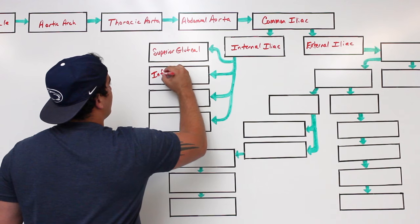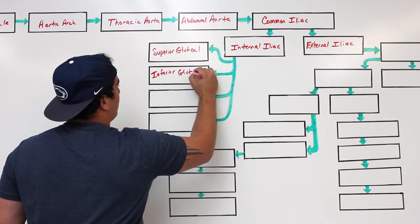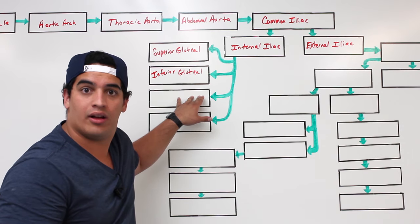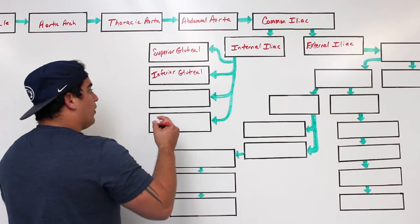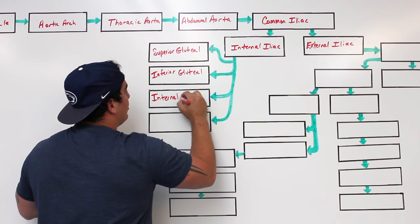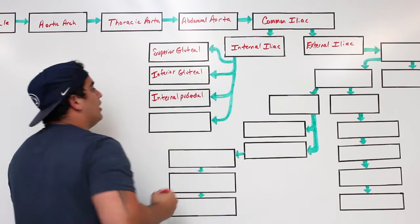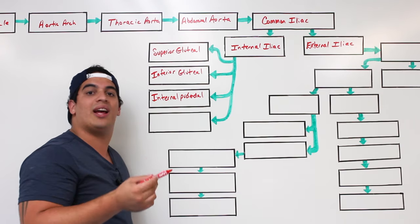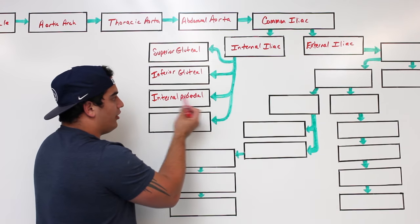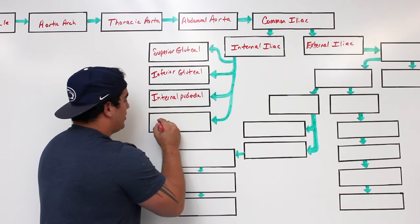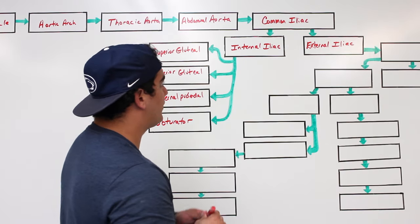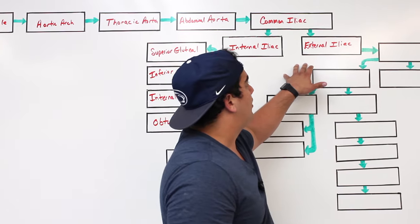The internal iliac then gives off another branch that supplies external genitalia for both male and female — that's called the internal pudendal artery, which also supplies accessory structures within the pelvis. Finally, it gives off the obturator artery. So from the internal iliac: superior gluteal, inferior gluteal, internal pudendal, and obturator artery.